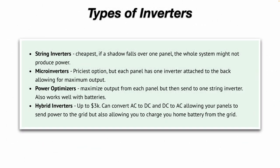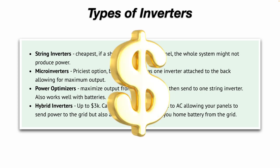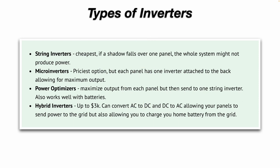Types of inverters. String inverters are the cheapest. However, if a shadow falls over one panel, the whole system might not produce power. Microinverters are the priciest option, but the advantage is each panel has one inverter attached to the back of it, allowing for maximum output. And if one or multiple panels are in shadow, the panels that are still in sunlight will still produce electricity. There are also power optimizers, which maximize output from each panel but then send it to one string inverter. They also work well with batteries.